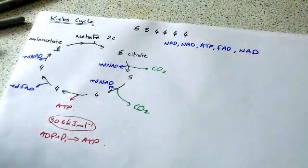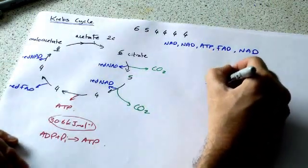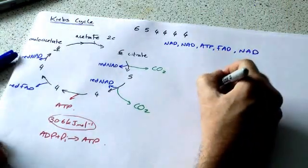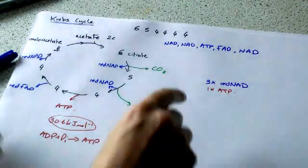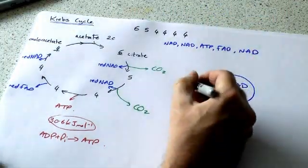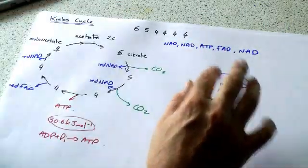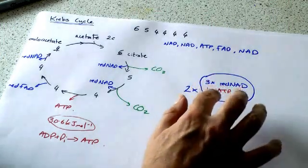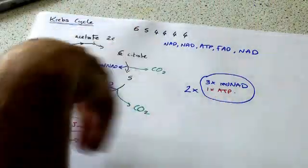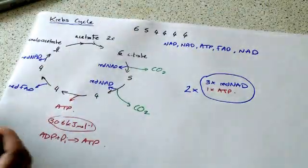Let's just add up what we've got here. For each turn of Krebs cycle, we get three lots of reduced NAD and one lot of ATP. But remember that each turn of the cycle is for one molecule of pyruvate, so from each glucose you would get two times your amount. If they ask you a question, make sure you look carefully and think, are they asking me about a molecule of pyruvate, or are they asking me about a molecule of glucose? Each molecule of glucose will be broken down to two pyruvates.